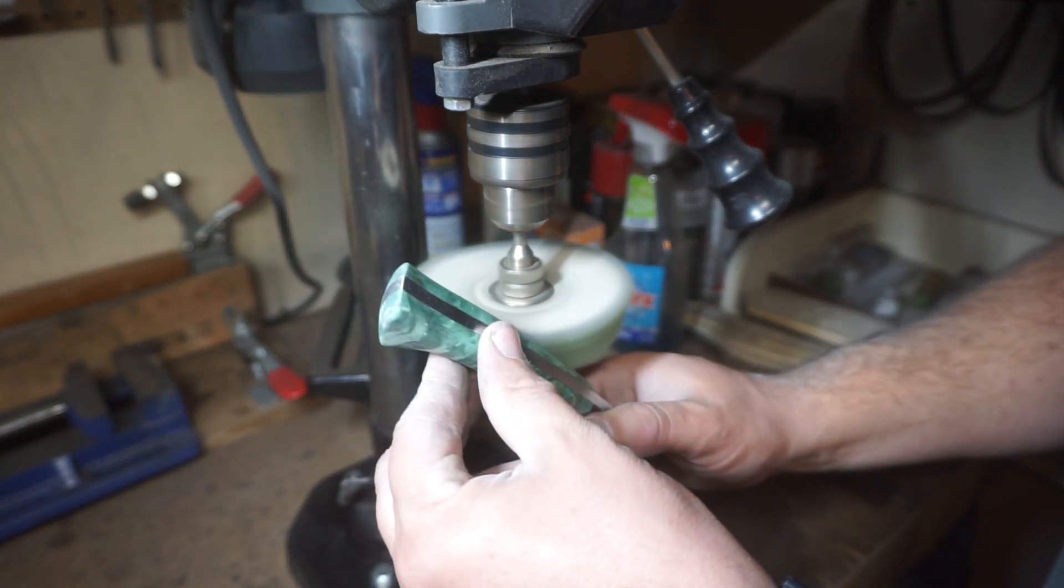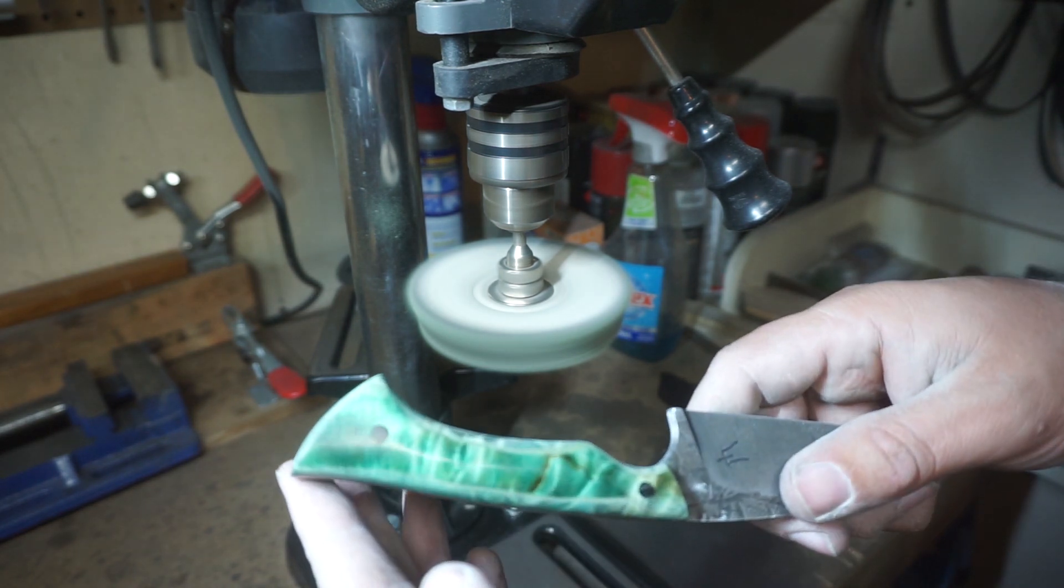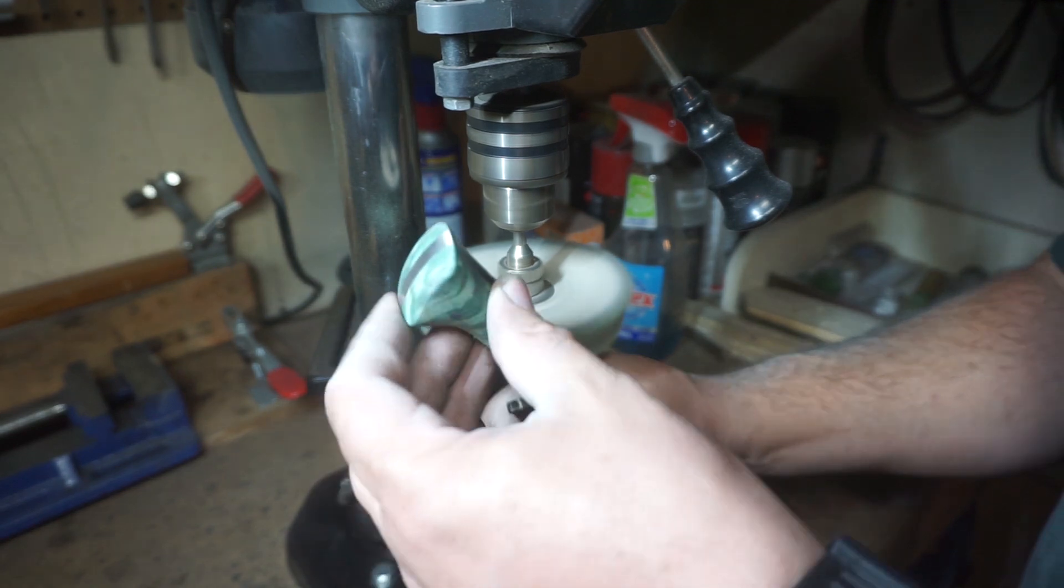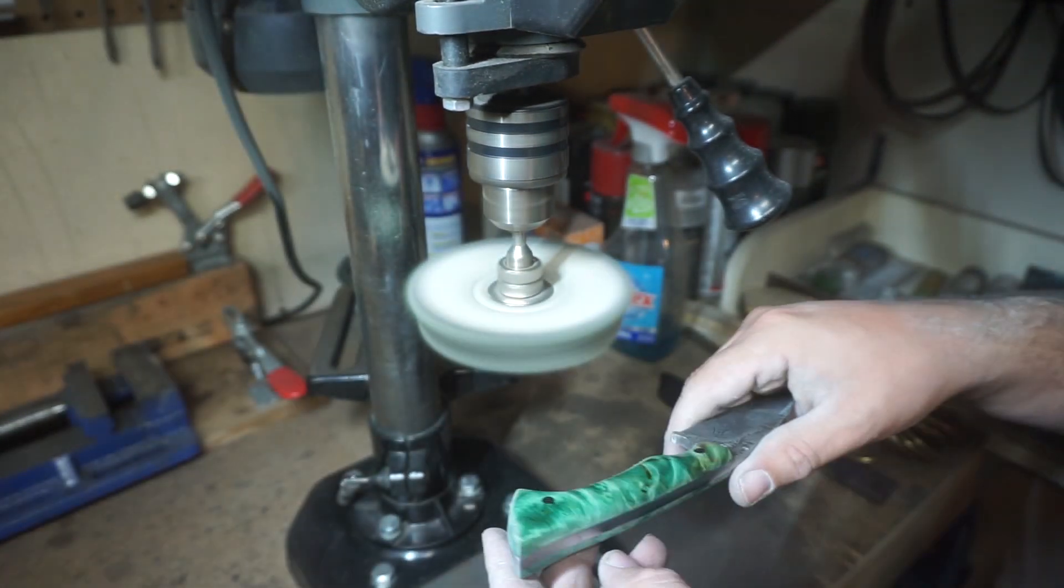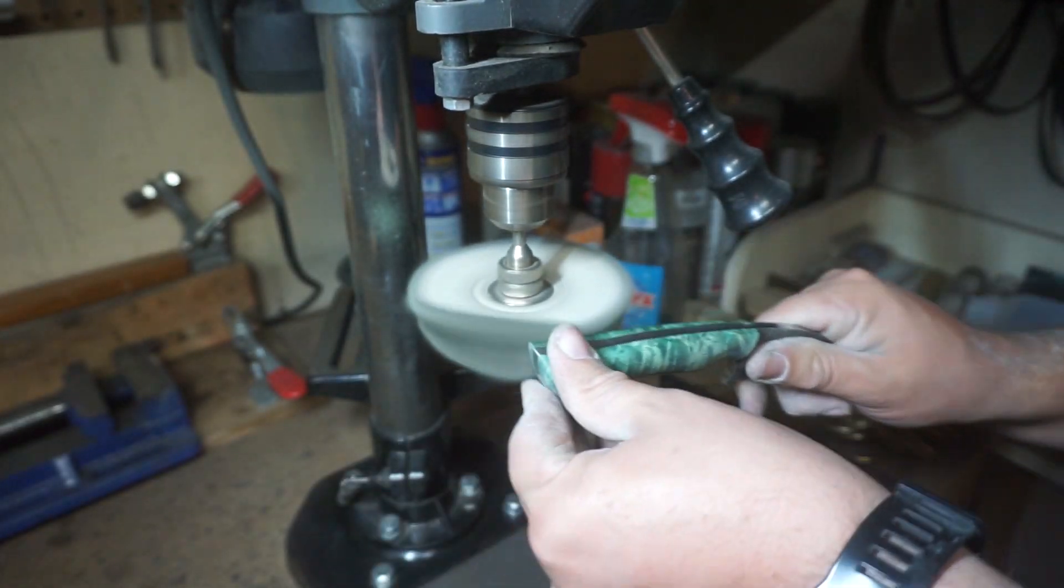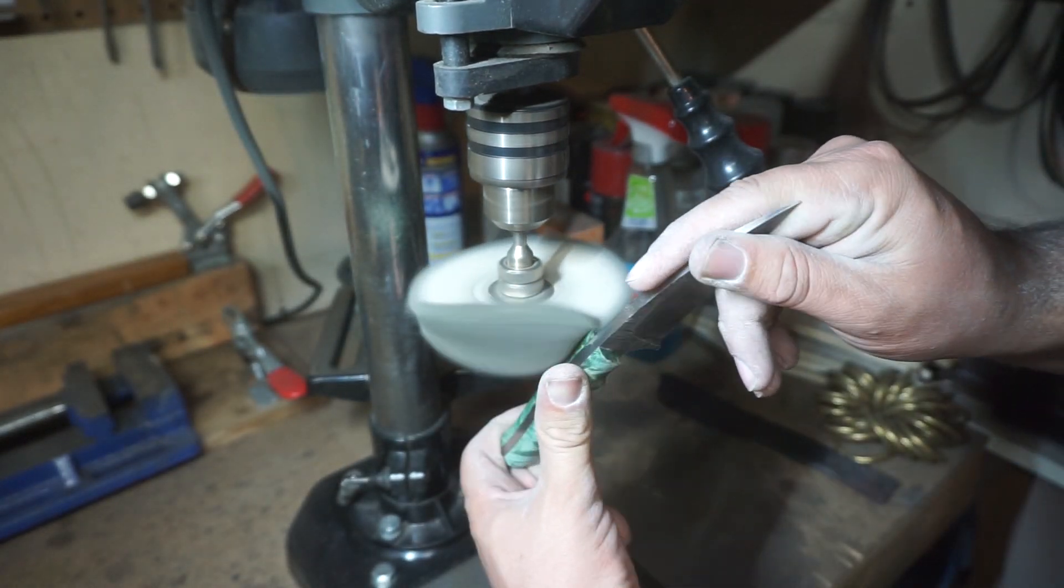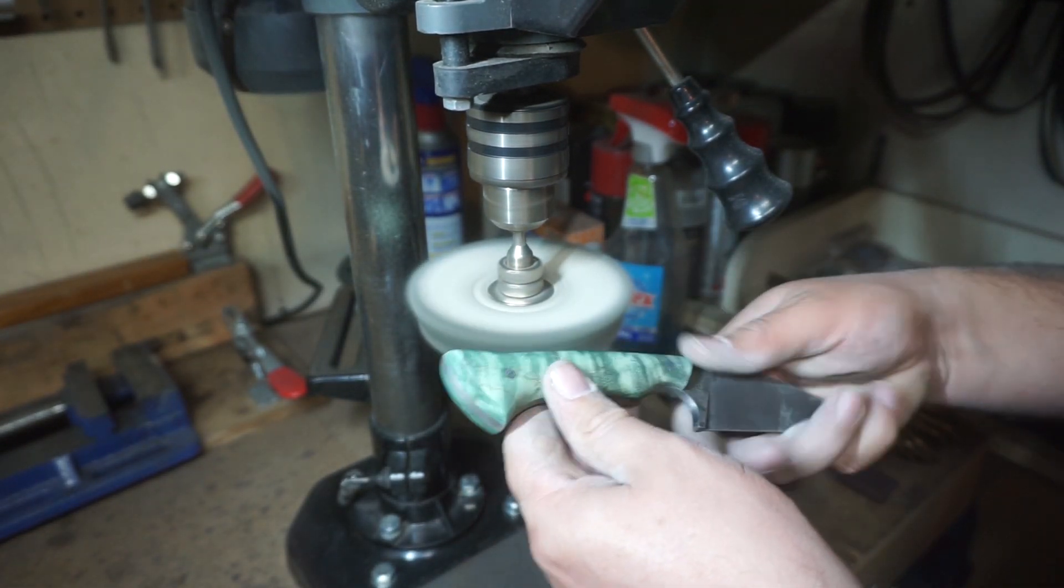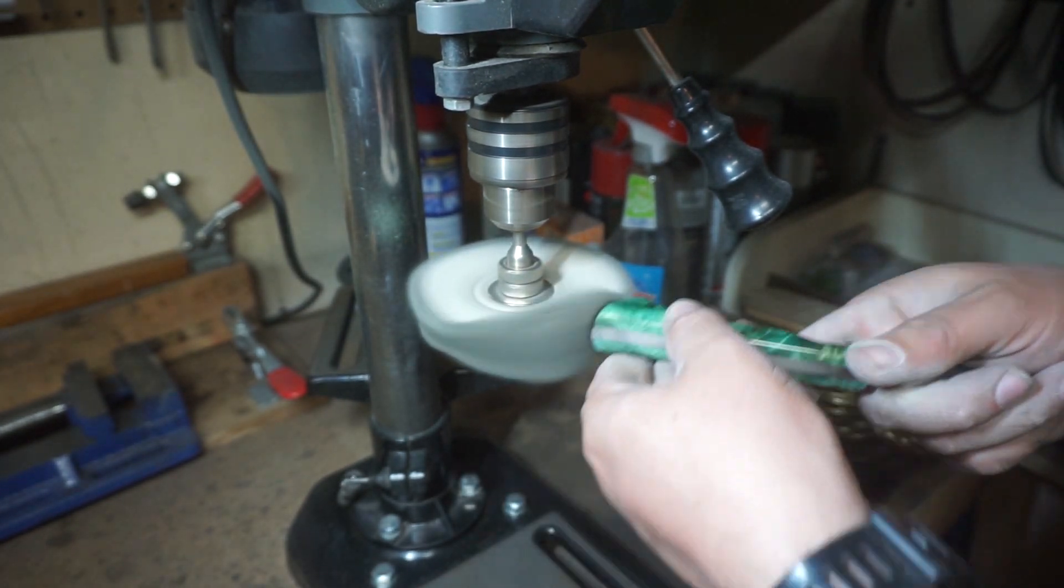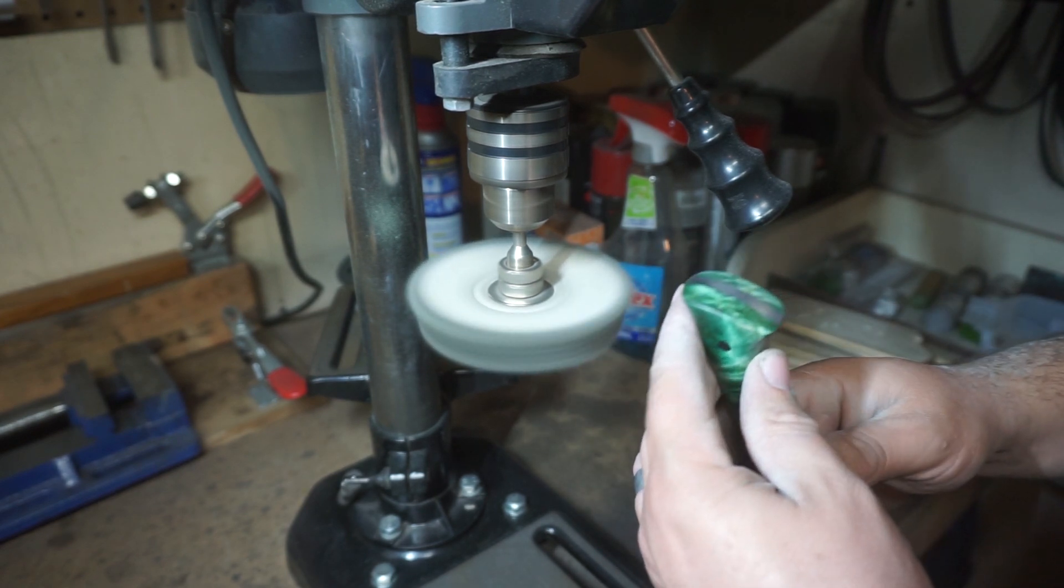Now when it comes time to buff, we just used a green buffing compound on a medium wheel and it brought every beautiful grain out of this handle that it possibly could. Now be careful whenever you're using something like this, especially on a blade that is really pointy and sharp like this right here. Even though it doesn't have an edge, it can still stab you if this wheel catches this knife and throws it at you.